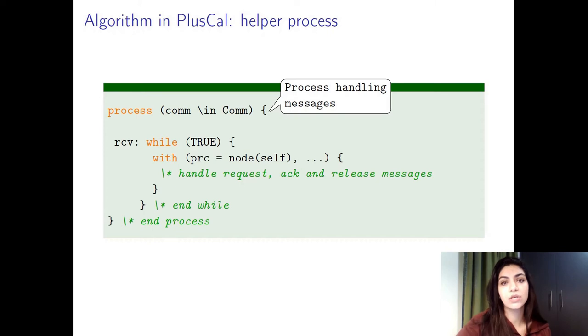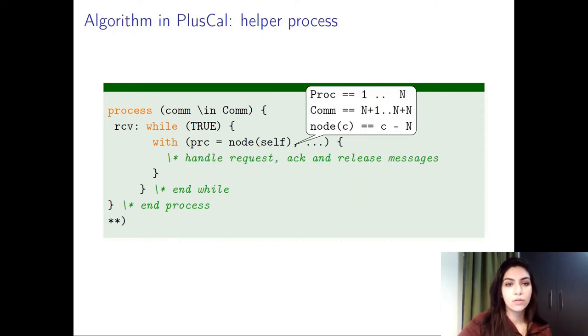We also need a helper process responsible for message handling, or communication between processes. The helper process uses an operator we defined called node. Node identifies the main process corresponding to the communicator C. Inside this block, we are handling request, acknowledge, and release messages. Because we have two processes working together, the variables must be declared globally in order for them to be accessible by both processes.